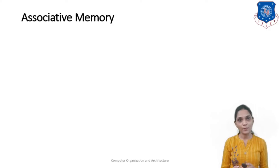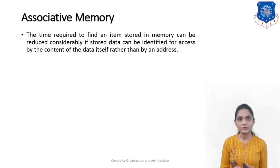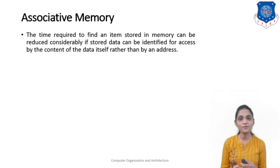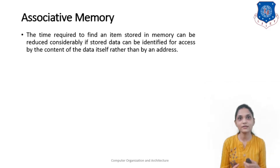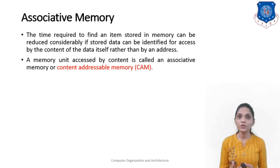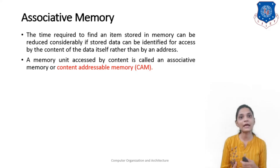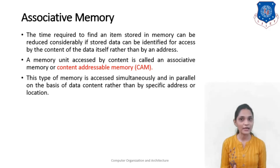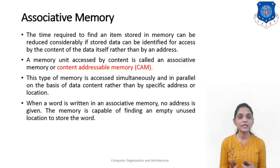Next, we will see associative memory. The time required to find an item stored in memory can be reduced considerably if stored data can be identified for access by its content or the data itself, rather than by its address. If you search memory by means of data content, you can access it faster than by accessing by address. A memory unit accessed by its content is known as associative memory, or content addressable memory.